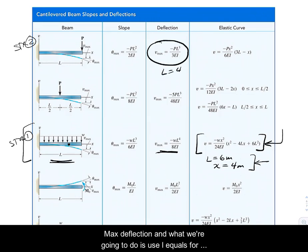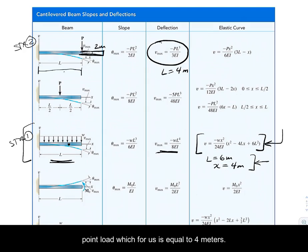And what we can do is use our max deflection, and what we're going to do is use L equals four meters. Because in our beam we have two meters that go past that point load, but they just go along for the ride and afterwards it's just straight line deflection. So what we're really interested is the distance from the wall to the point load, which for us is equal to four meters.